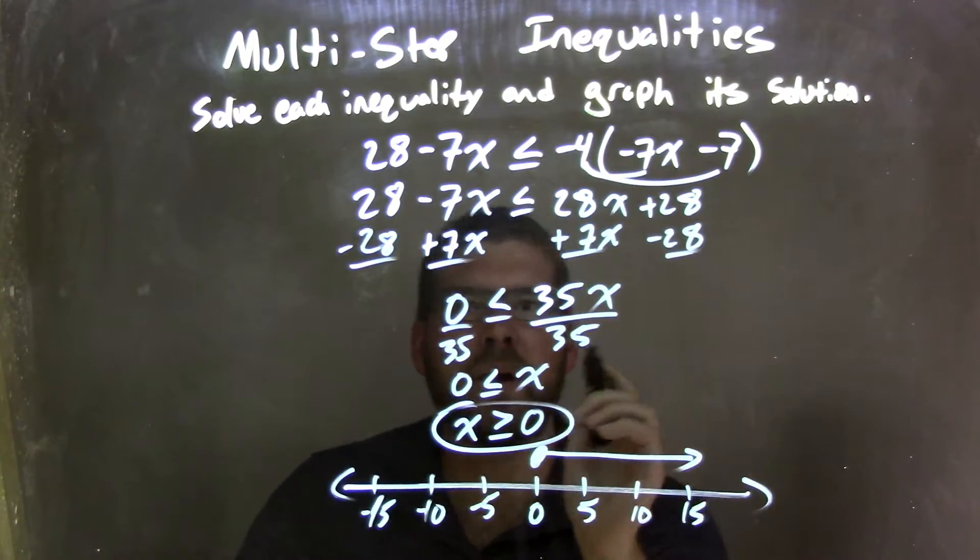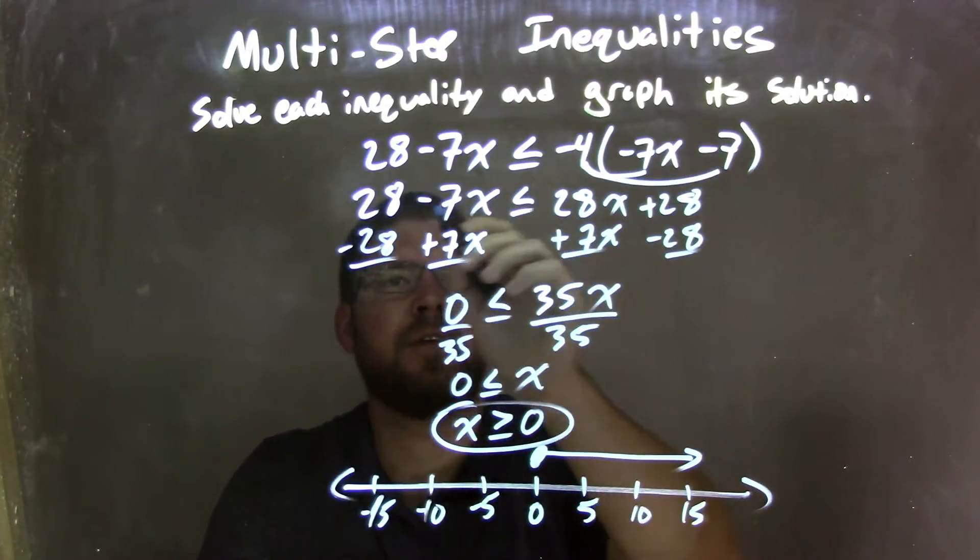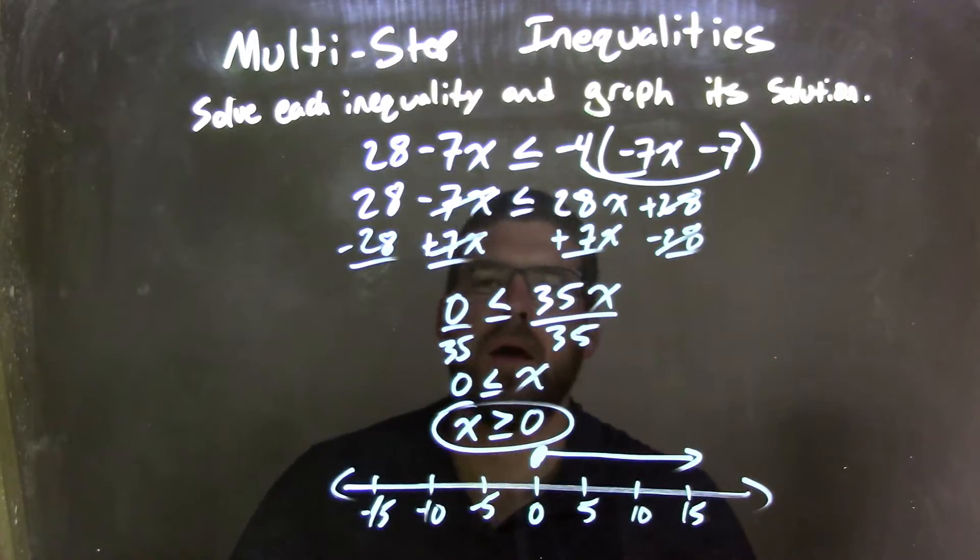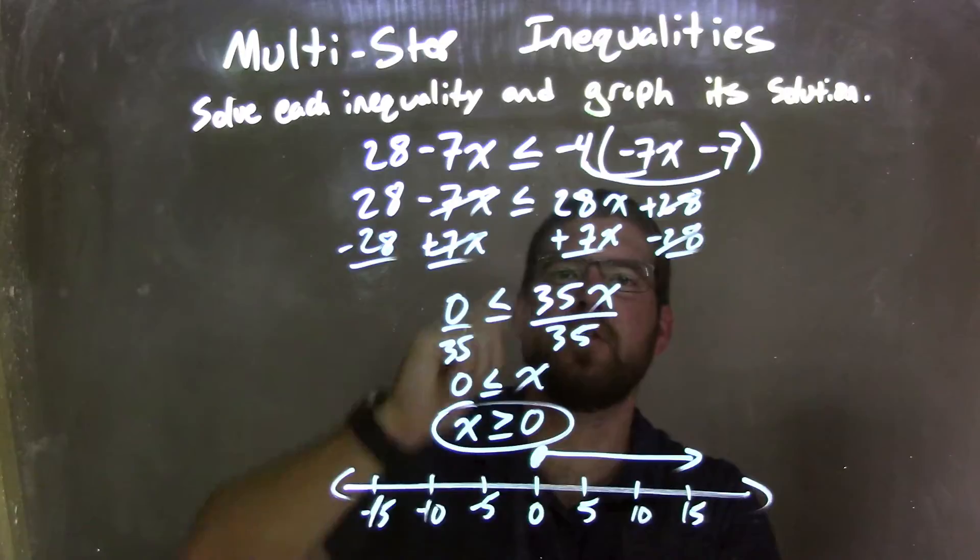I then brought my like terms together. In this one, I decided to add my 7x to both sides and subtract my 28 to both sides, and eliminated these terms. Well, 28 minus 28 is 0, and 28x plus 7x is 35x.